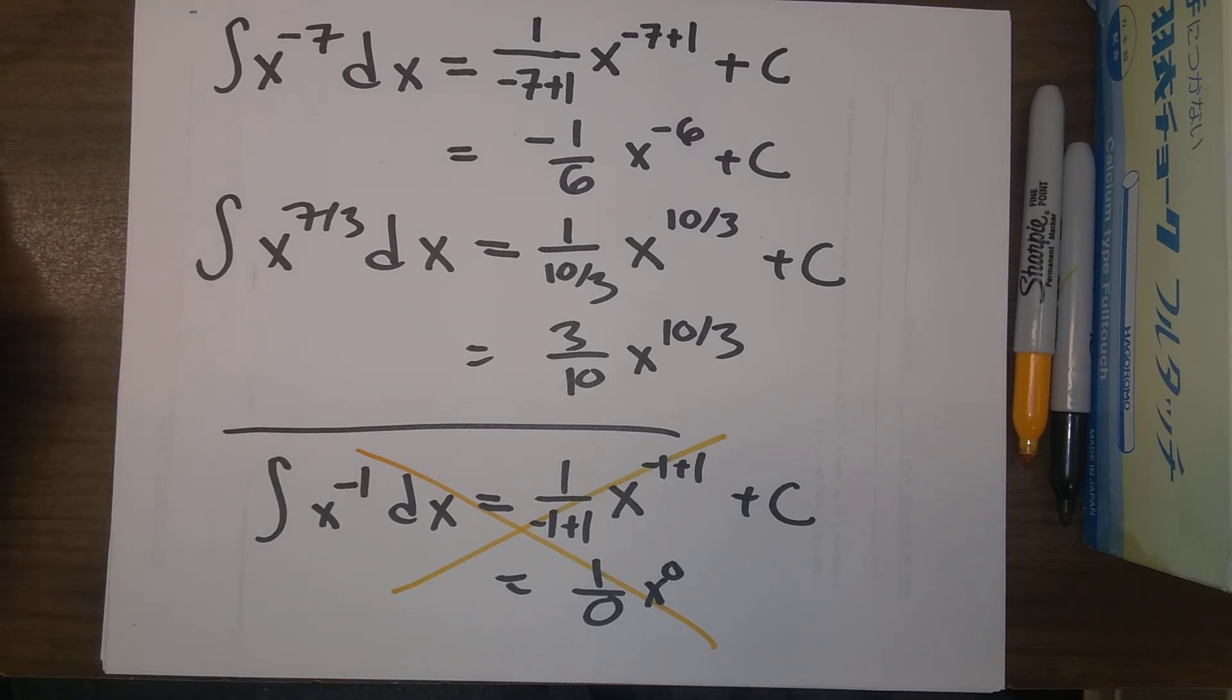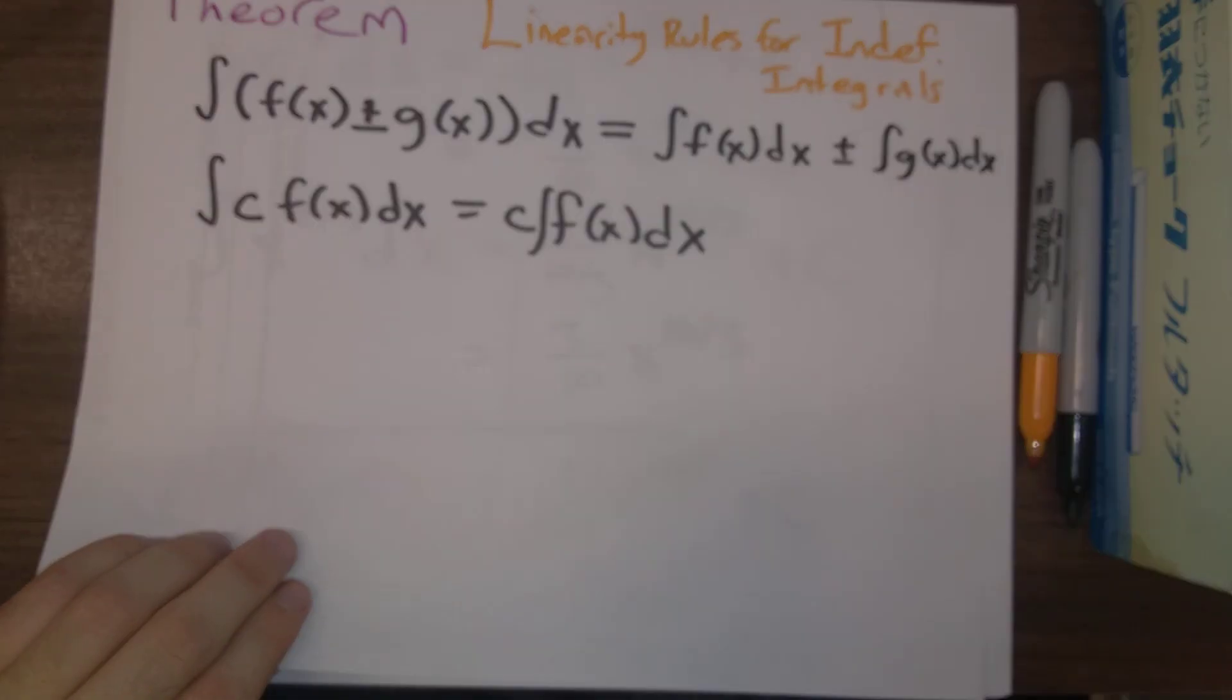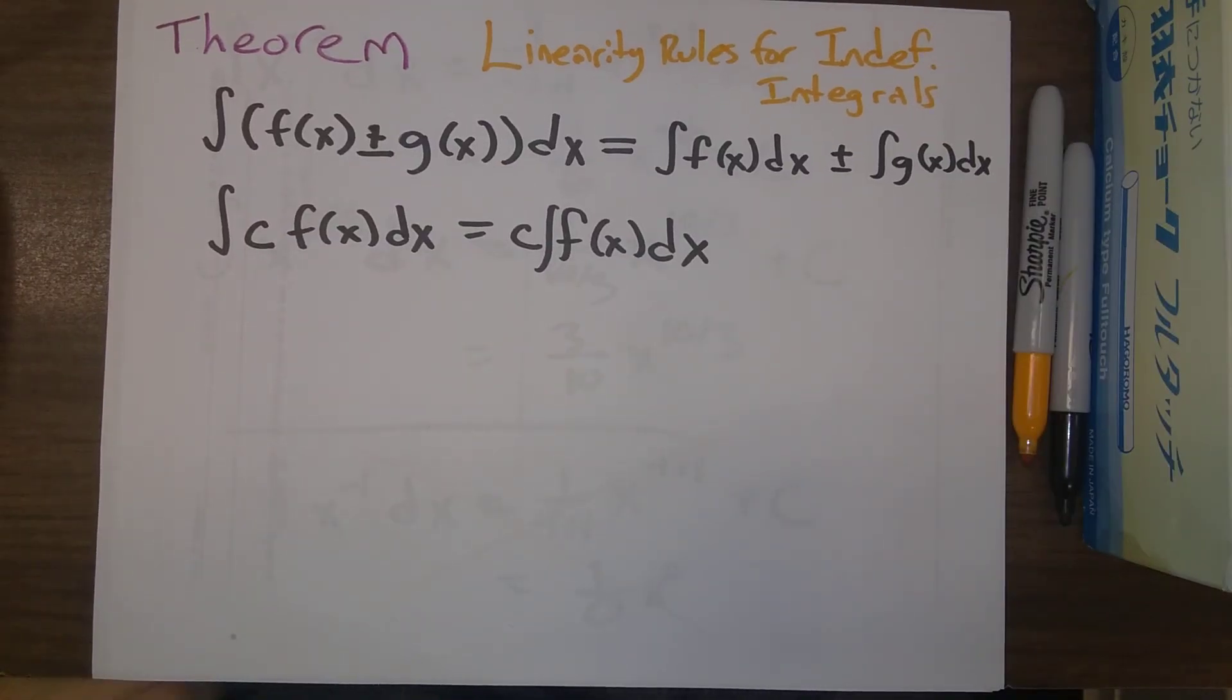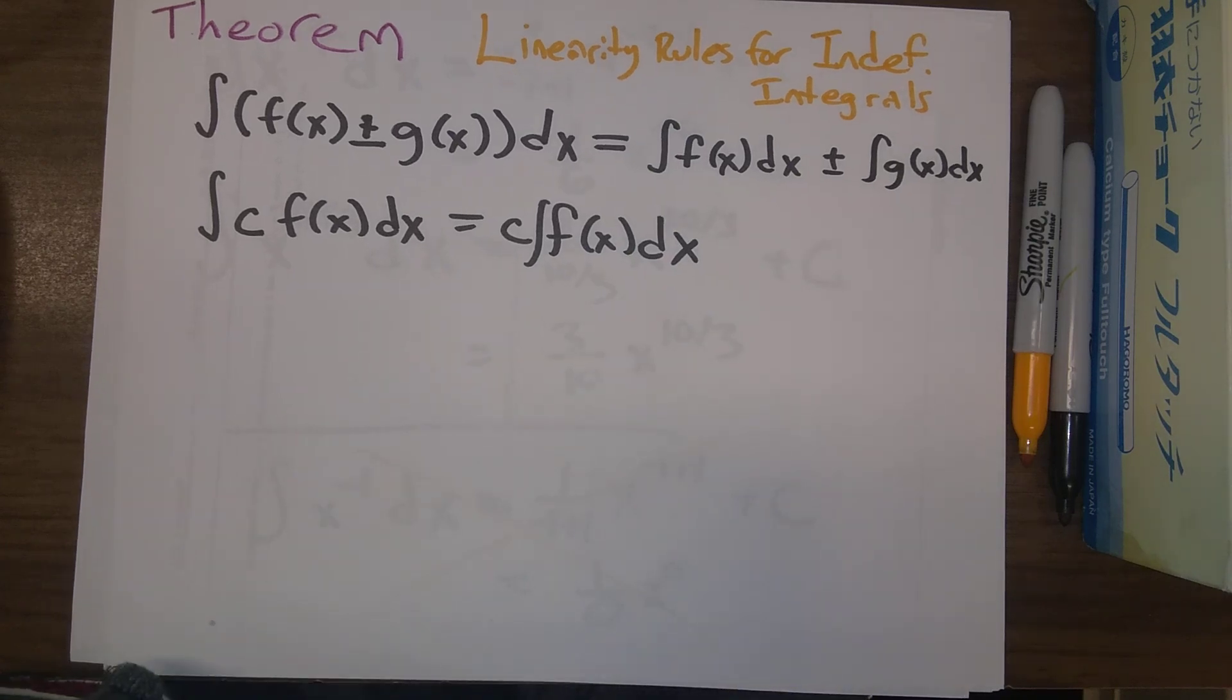Okay, another rule that we have here is that we have linearity rules for indefinite integrals just like we have linearity rules for our definite integrals. The indefinite integral of a function f of x plus a function g of x is simply the sum of the respective indefinite integrals. We also get the same thing if we have the indefinite integral of f minus g. And also, if we have a constant c here, we can effectively move the constant c outside of our integral.